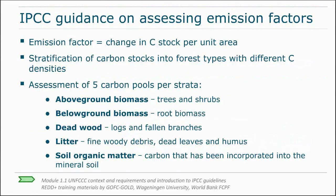In terms of emission factors, we have to keep in mind that we have several pools. Above ground biomass is only one of the pools. There's also below ground biomass, which is basically the root biomass, often estimated as a root-to-shoot ratio or a fraction of the above ground biomass. The other pools — deadwood and litter — can also be important, and you can decide whether it's worthwhile to estimate those using what the IPCC calls key category analysis: is it worth measuring the pool given the importance of its contribution to the total emissions and removals? The same basically holds for the soil pool as well.